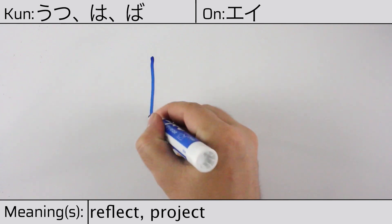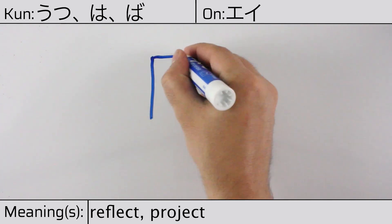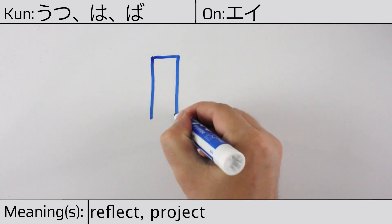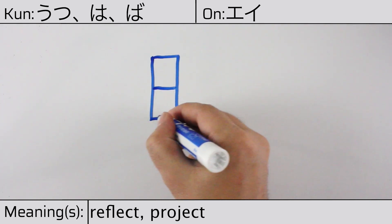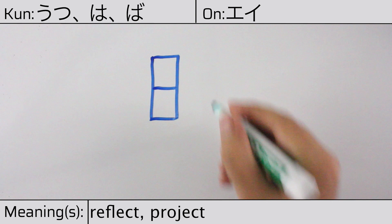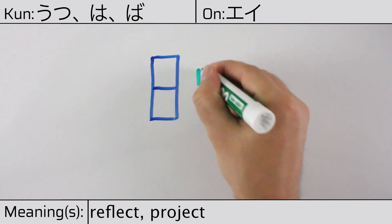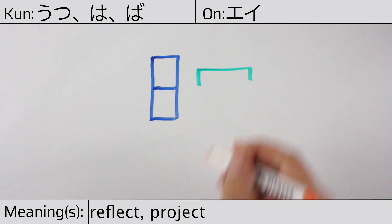You can remember this kanji with this hint: like water in a big pot reflecting sunlight on a wall.